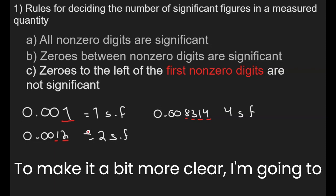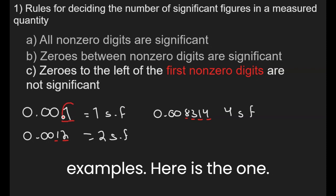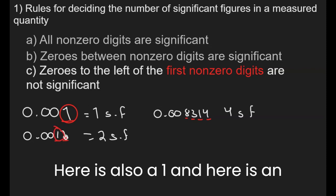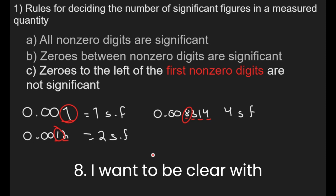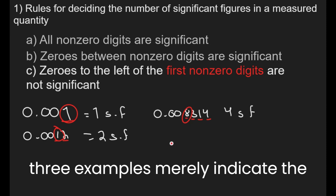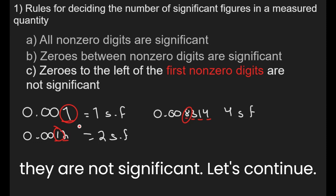To make it a bit more clear, I'm going to circle the first non-zero digit in all examples: here is the 1, here is also a 1, and here is an 8. The zeros in all these three examples merely indicate the position of the decimal point — that's why they are not significant.